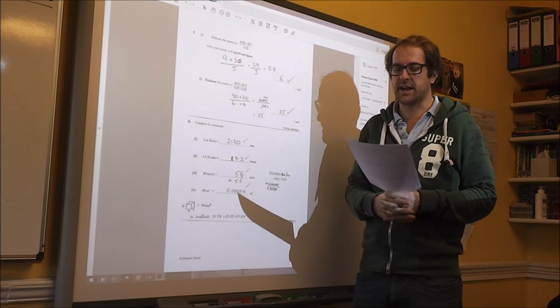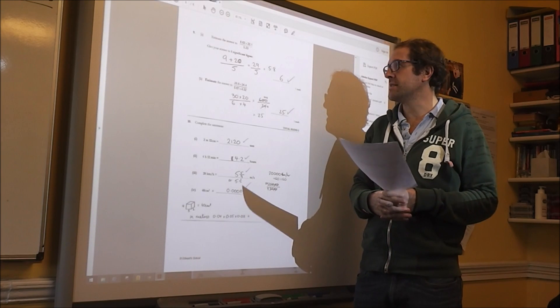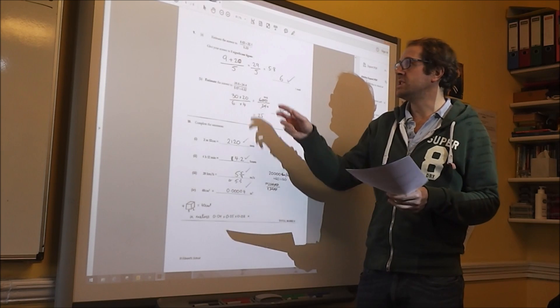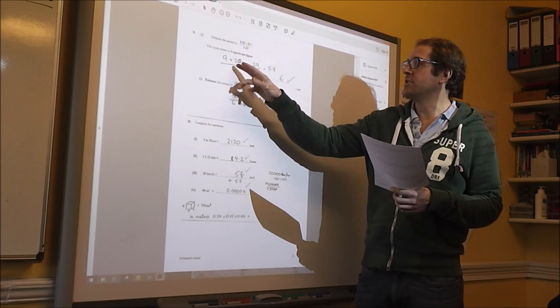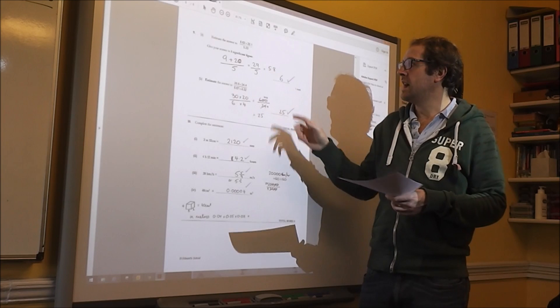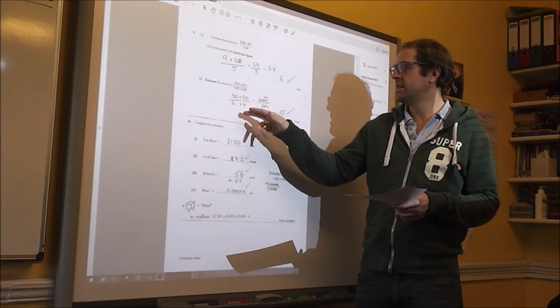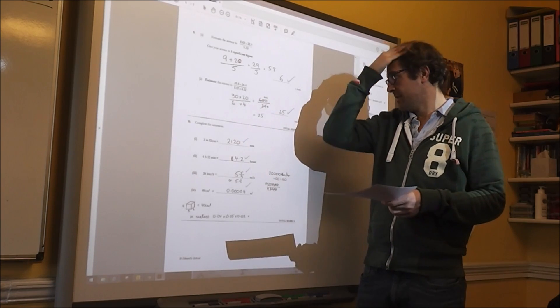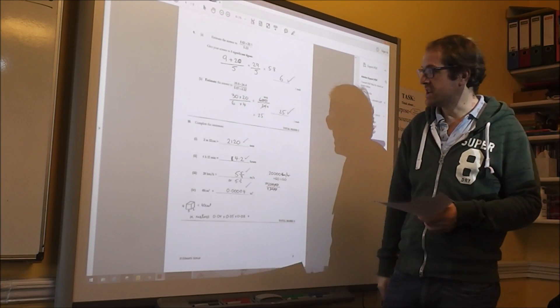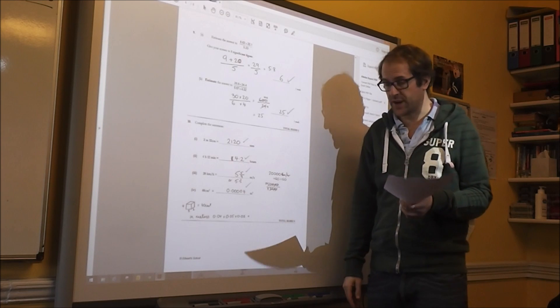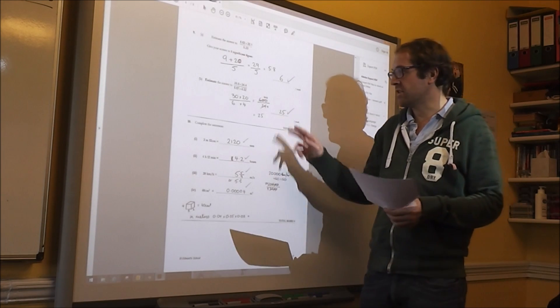Right, number 9 is significant figures. One significant figure, so I rounded those to one significant figure and got 6. I did the same with this one. 30 times 20 over 6 times 4, which is 600 over 24. I cross-counted, I simplified that, I cancelled it, and I got 25.